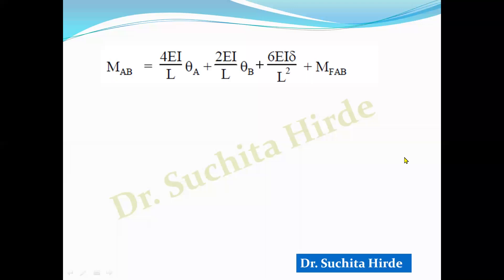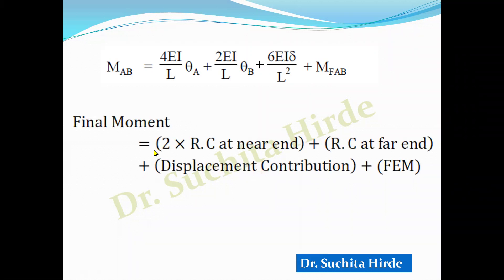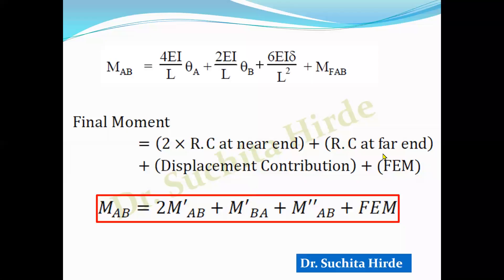Kani's method is derived from the slope deflection method. In this method, 2EI/L is called rotation contribution and 6EI·delta/L² is called displacement contribution. The final moment in Kani's method is: two times rotation contribution at the near end, plus rotation contribution at the far end, plus displacement contribution, plus fixed end moment.